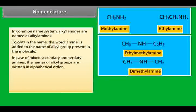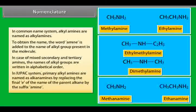In case of mixed secondary and tertiary amines, the names of alkyl groups are written in alphabetical order. In IUPAC system, primary alkyl amines are named as alkanamines by replacing the final E of the name of the parent alkane by the suffix amine.